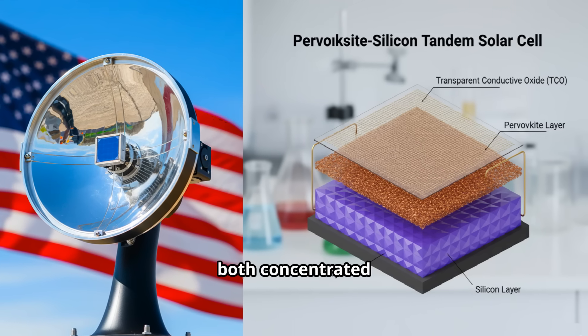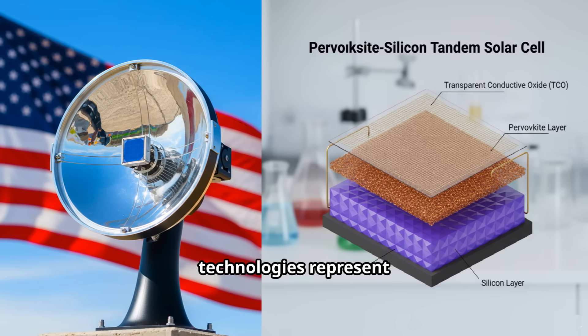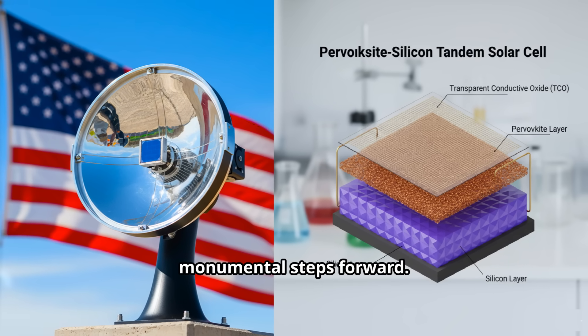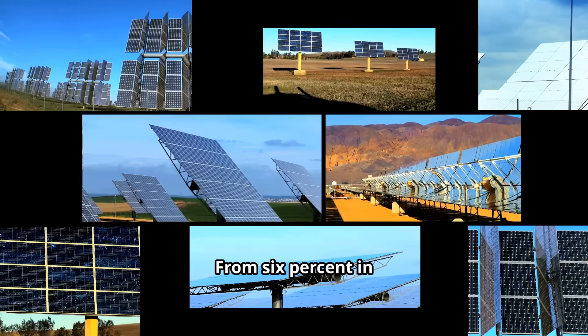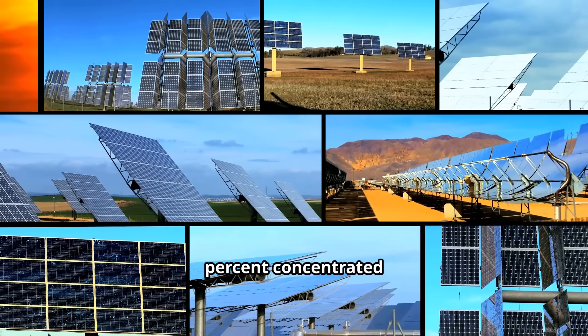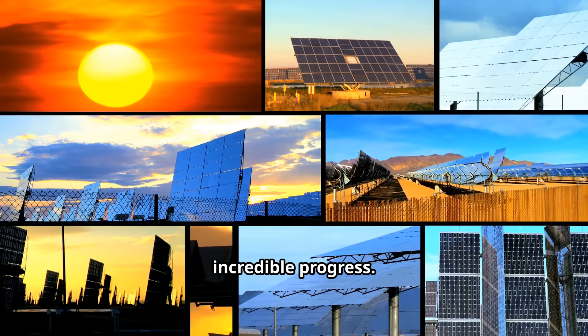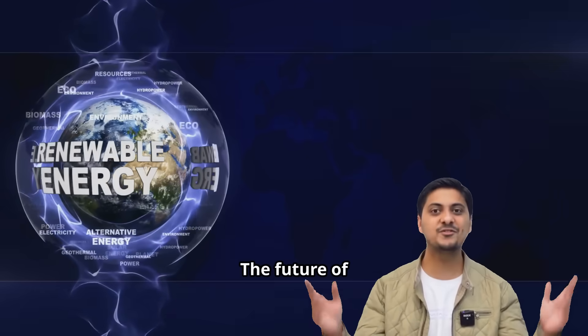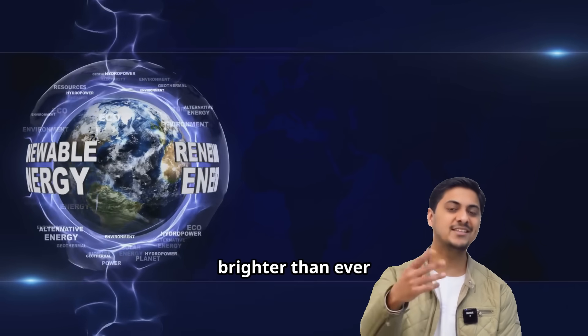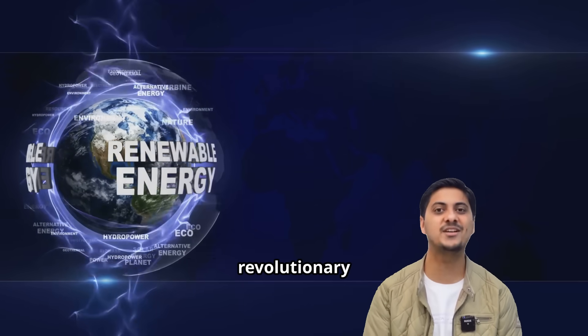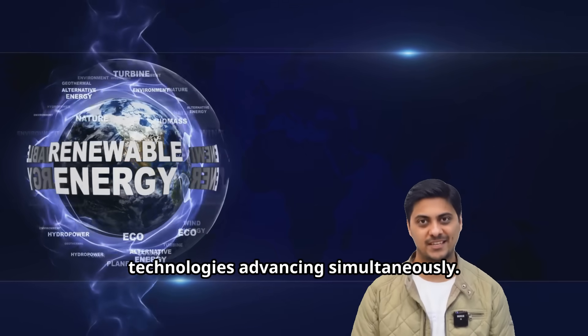Despite challenges, both concentrated photovoltaic and perovskite technologies represent monumental steps forward. From 6% in 1954 to 47.1% concentrated and 34.85% tandem shows incredible progress. The future of renewable energy looks brighter than ever with multiple revolutionary technologies advancing simultaneously.